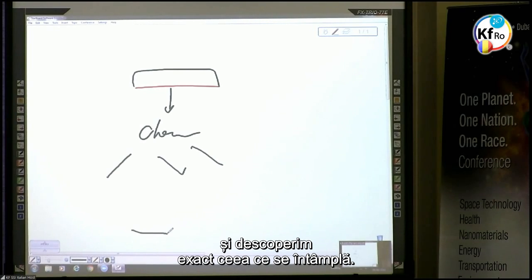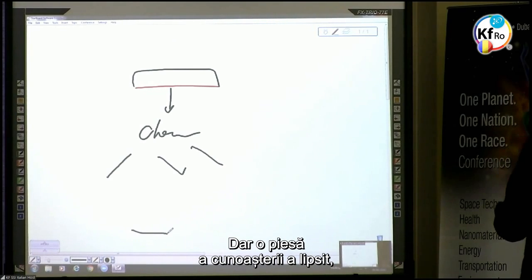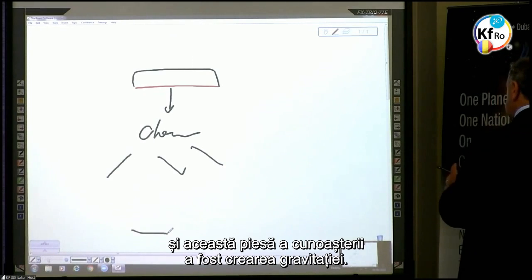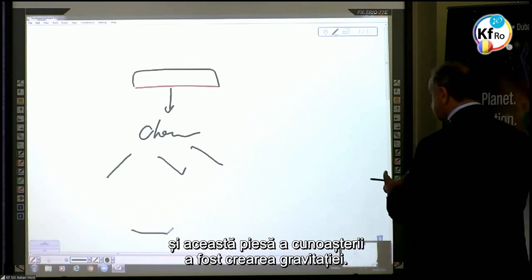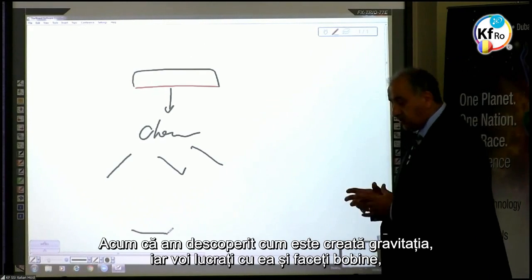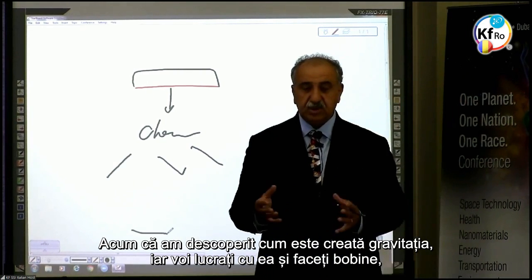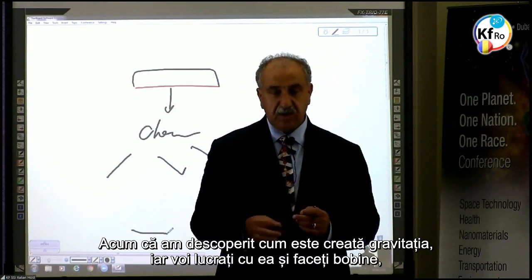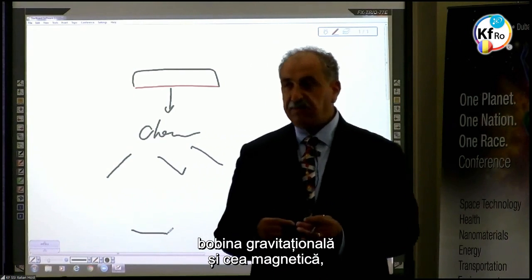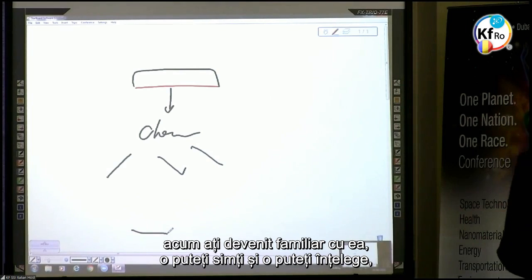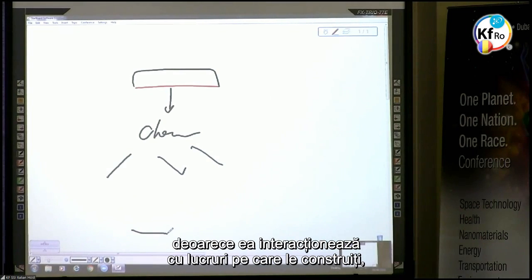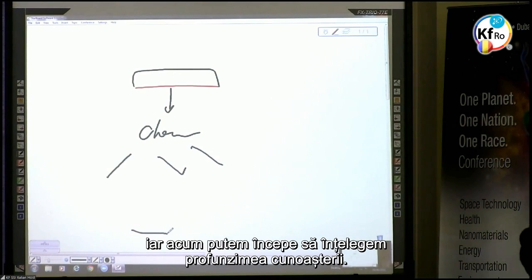We are unraveling exactly how everything happens, but one piece of knowledge was missing - the creation of gravity. Now that we have found how gravity is created, you work with it, you make gravitational coils and magnetical coils. Now you become familiar with it, you can feel it and understand it because it interacts with the things you make. Now we can start understanding the depth of the knowledge.